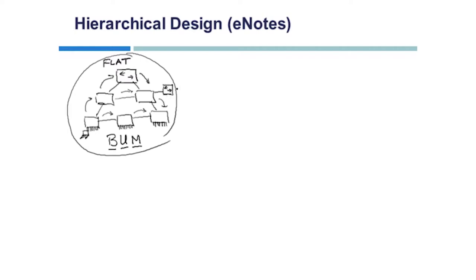Then comes the hierarchical design with its three layers. One of the original ideas was that when we had this broadcast storm coming in, we started using some sort of layer three device. If I replace a switch at the top with a router, a router creates different broadcast domains — routers are not allowed to propagate a broadcast from one segment to another. Everything going through the router, with the exception of multicast, had to be a unicast address.